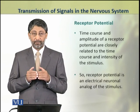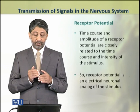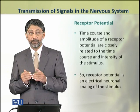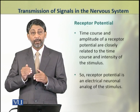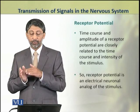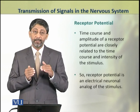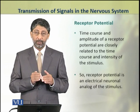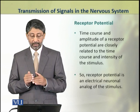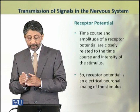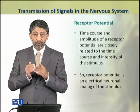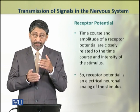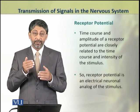Dear students, the time course and amplitude of a receptor potential are closely related to the time course and intensity of the stimulus. So the receptor potential is an electrical neuronal analogue of the stimulus. In fact, this receptor potential is essentially a representation of the stimulus itself.